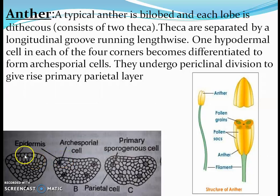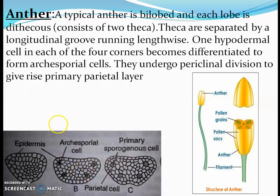The anther consists of homogenous cells. After that, hypodermal cells in each of the four corners become differentiated to form archesporial cells. These archesporial cells undergo a periclinal division to form the outer layer, which develops into the walls of the anther, and the inner sporogenous tissue.